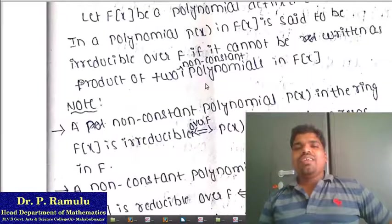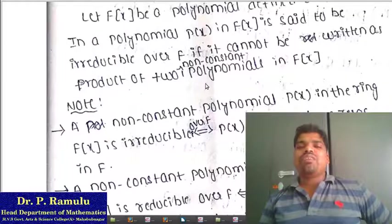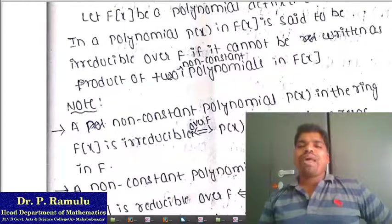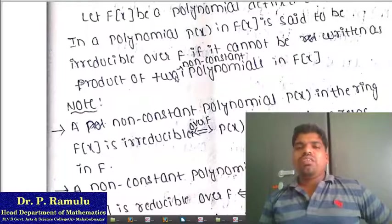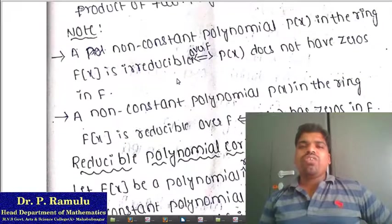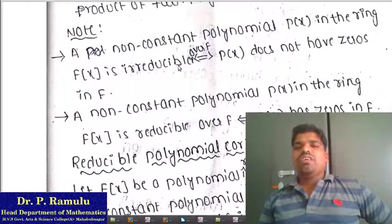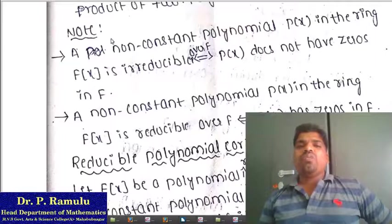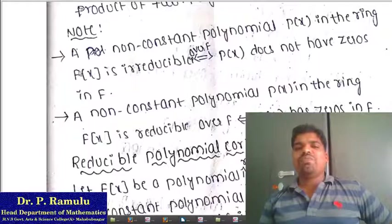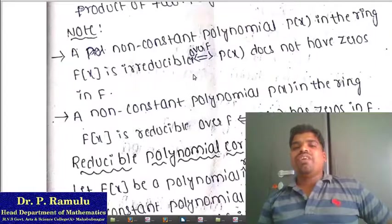A prime number cannot be written as a product of two distinct numbers other than one and itself. So similarly, an irreducible polynomial looks like a prime number. A non-constant polynomial P(x) in the ring F[x] is irreducible over the field F if and only if P(x) does not have zeros in F.